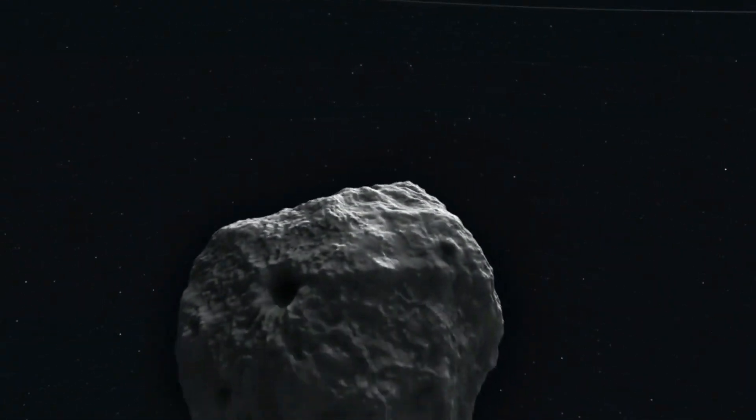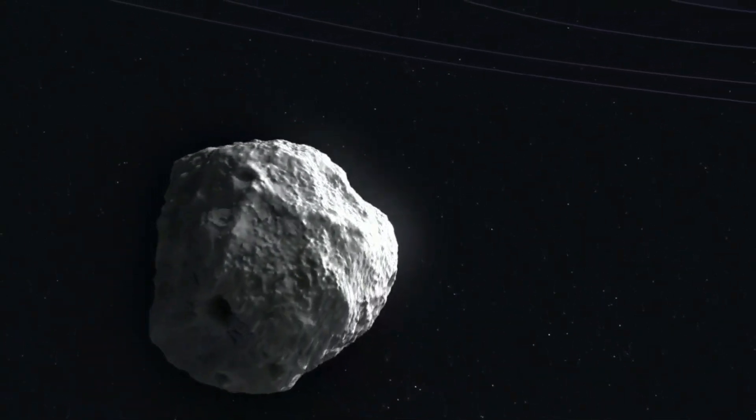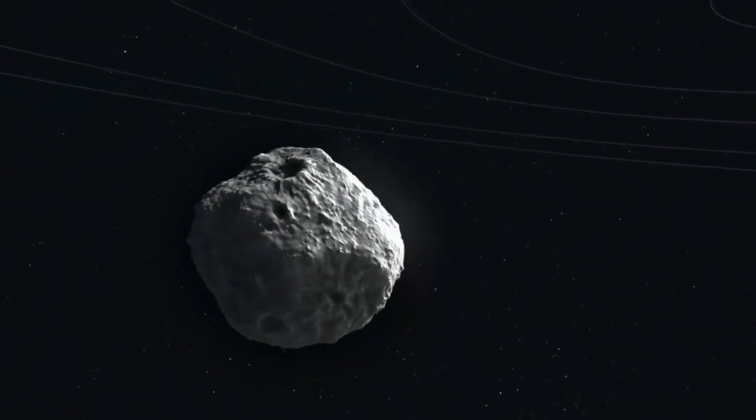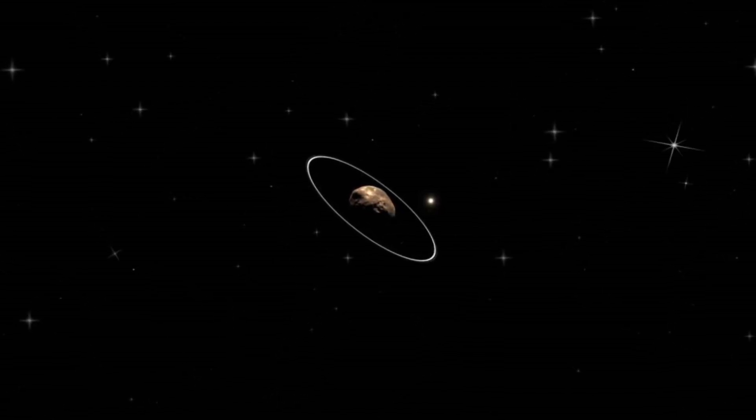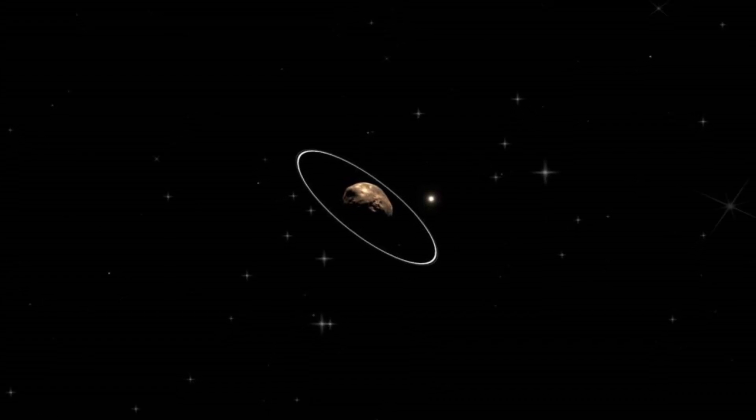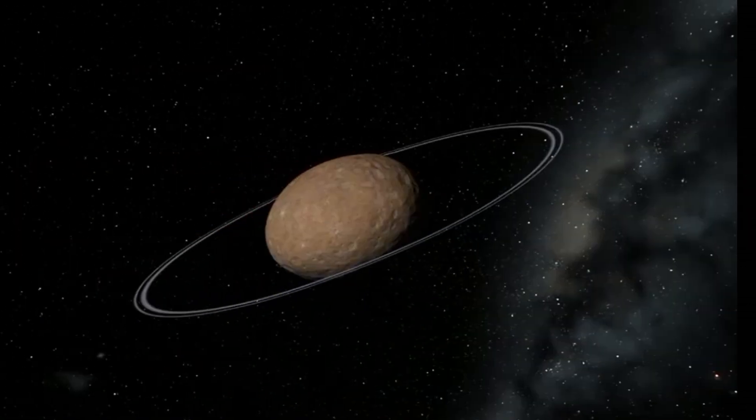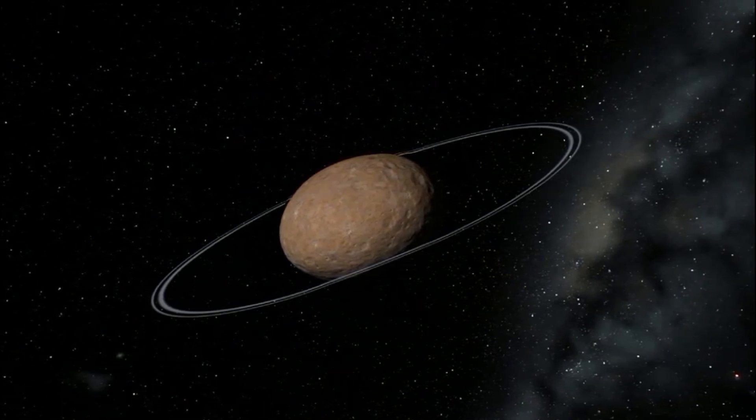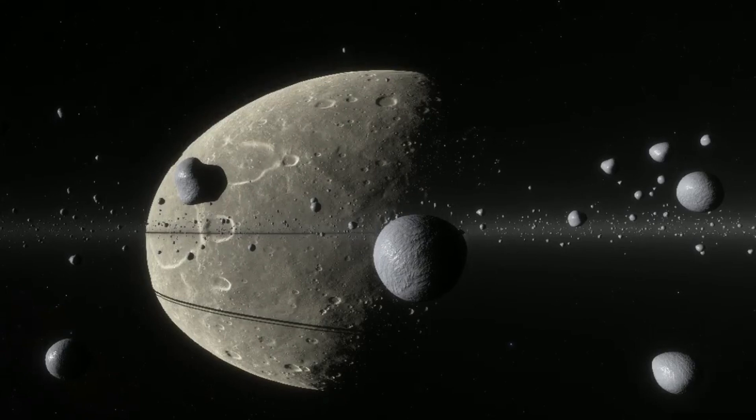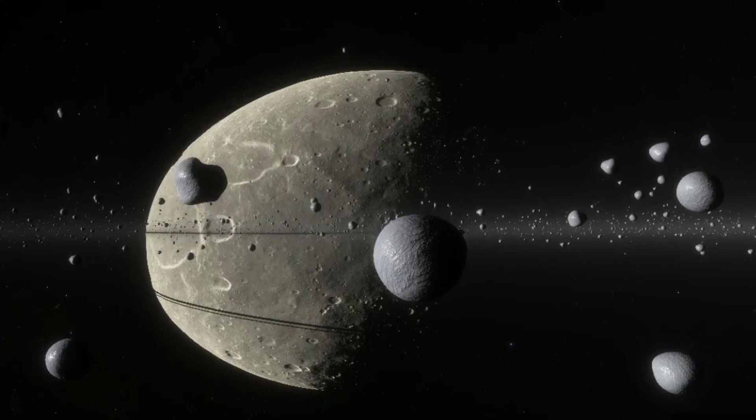The ringed asteroid Kariklo, a centaur asteroid that typically orbits between Jupiter and Neptune, orbits outside of Saturn's orbit and has a diameter of 250 kilometers. This asteroid is of particular interest because it has rings, a feature usually associated with planets. The rings were initially discovered in 2013 using the occultation method, which involves measuring the position and size of an object by observing it pass in front of a star. Webb had the opportunity to measure an occultation with Kariklo in October 2022, confirming the presence of the rings.